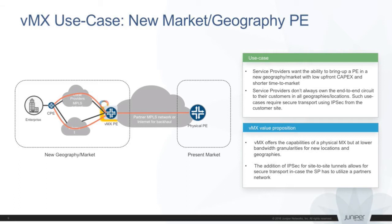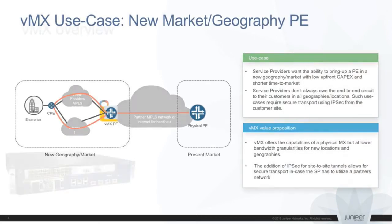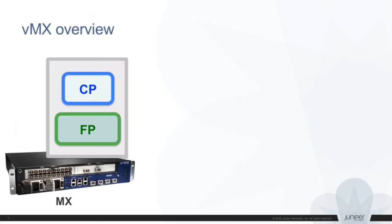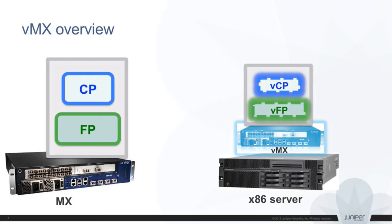Since MX has been heavily used everywhere, one important thing is that it is business critical. Being business critical, we have to take a lot of things into account. Our MX platform has a control plane and a forwarding plane. We deploy the same control plane and forwarding plane on a commodity server as two different VMs — that's why we call it the virtual MX platform. VCP runs as its own VM and VFP runs as its own VM.